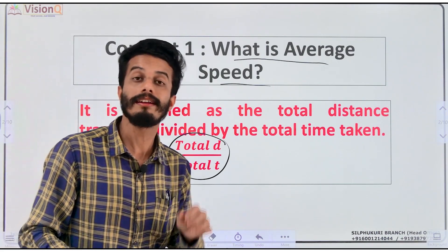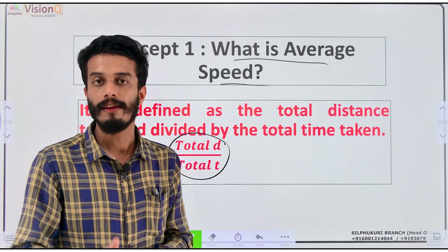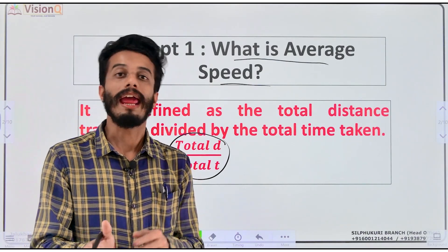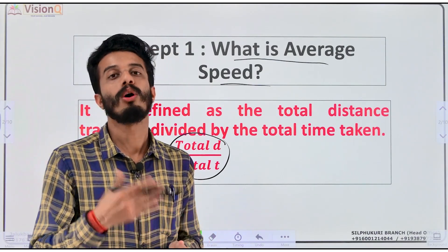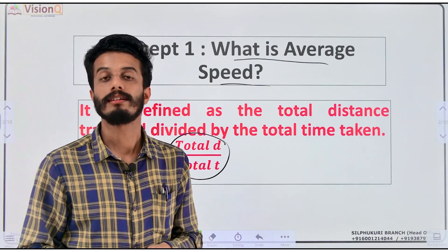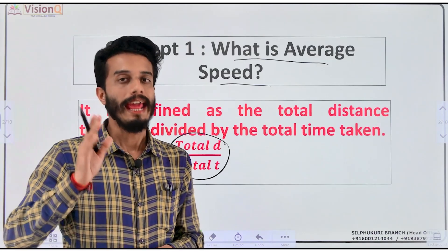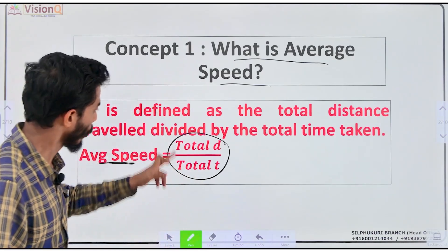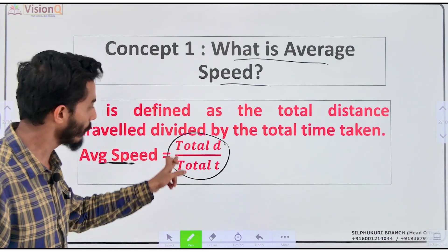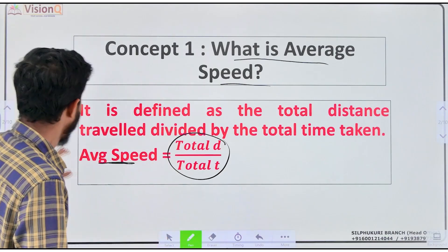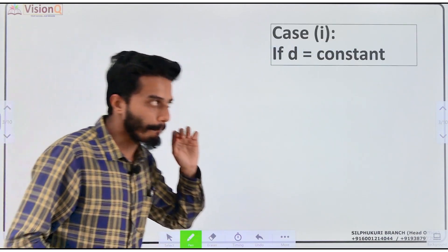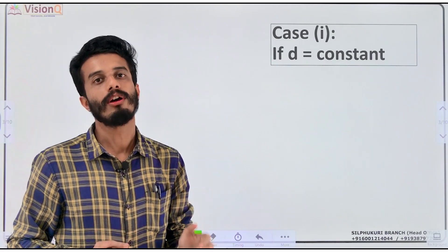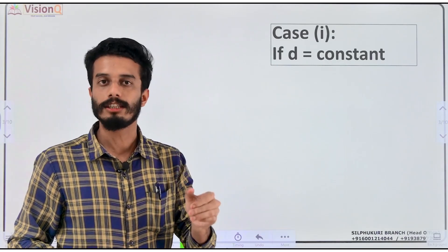It is very clear what average speed is: total distance by total time. This is the main formula. But the technique to apply depends on the case — the average technique depends on the other technique.